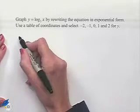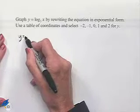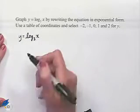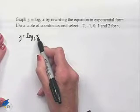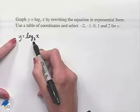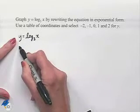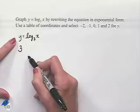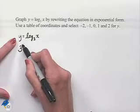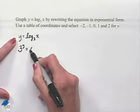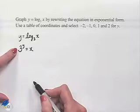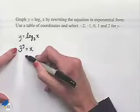We begin with our logarithmic equation y = log base 3 of x. To change to exponential form, the base 3 becomes the base in exponential format. A logarithm equals an exponent, so our exponent equals y. We come up with the exponential form: 3 to the y power equals x.